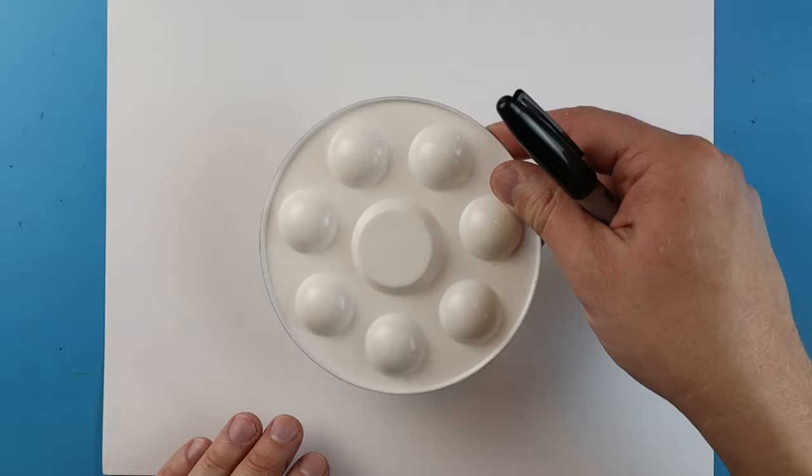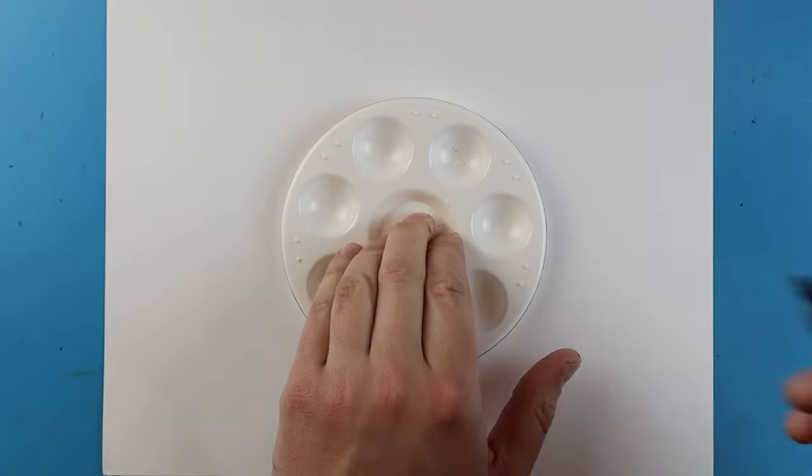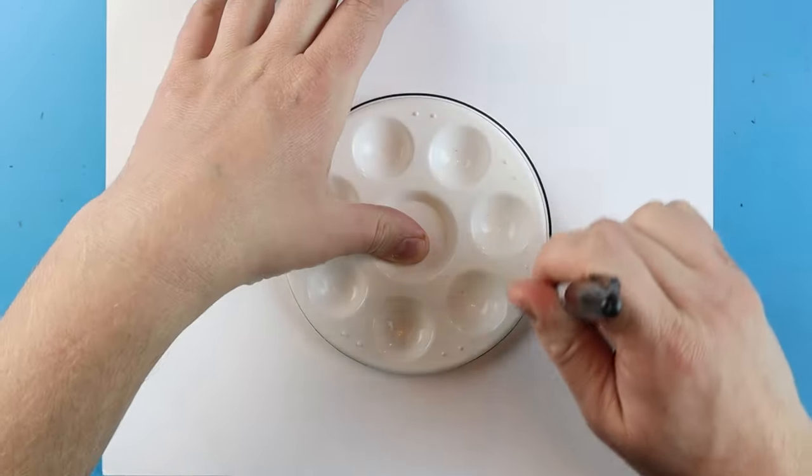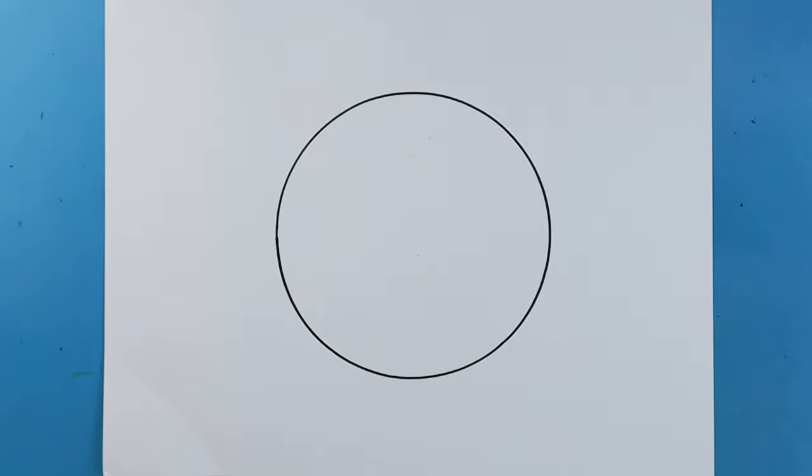Now to start off with our sun drawing I'm going to begin by tracing something circular. I'm just going to use this little small paint palette. I'm going to hold it down and just trace right around the whole palette for a nice little circle.